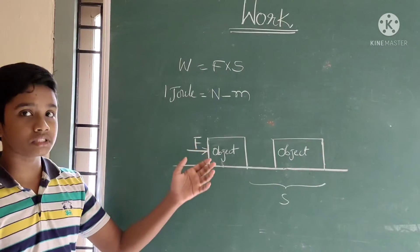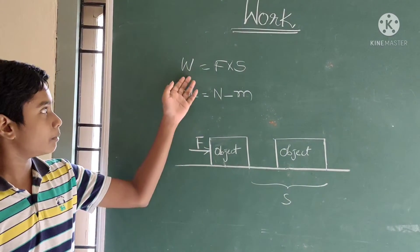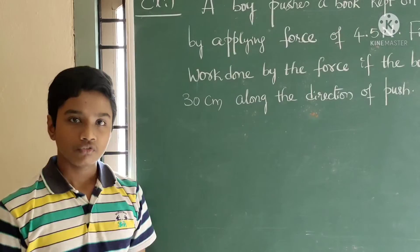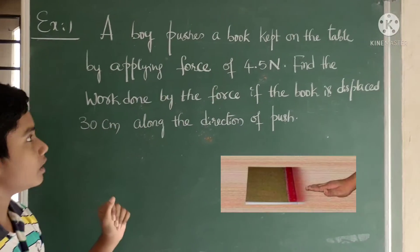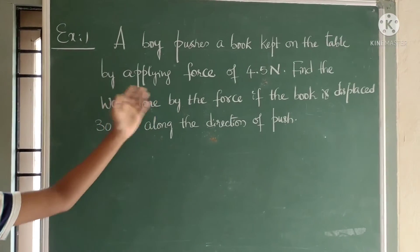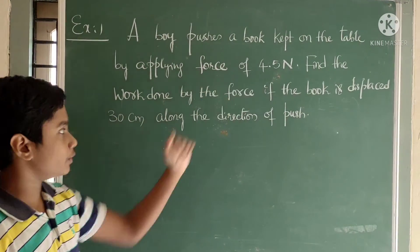Now we will see some problems based on the formula W equals FS. First problem: A boy pushes a book kept on a table by applying force of 4.5 newtons.